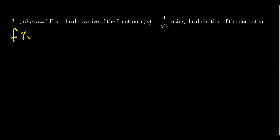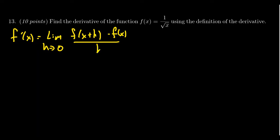To compute f prime of x, we take the limit of the difference quotient — the limit as h approaches zero of f of x plus h minus f of x over h. If we're not taking the limit of a difference quotient, we won't get any credit on this one because we didn't follow the instructions.